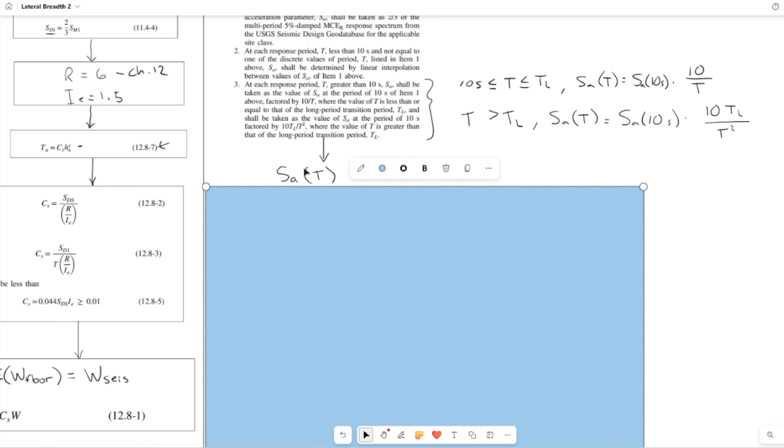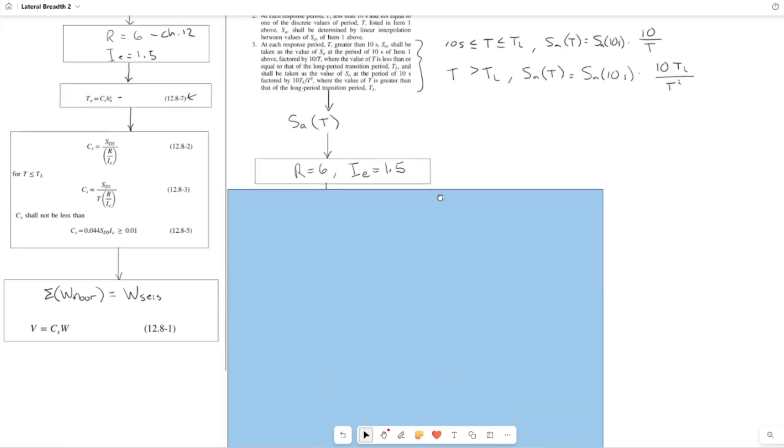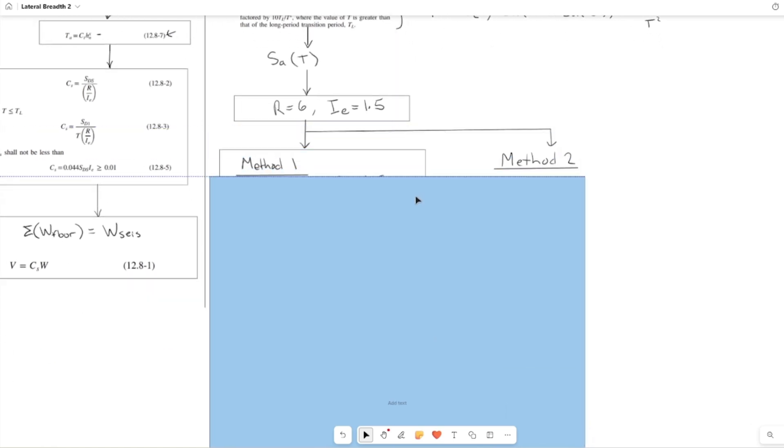The next step from this, you get s sub a as a function of t. And we really don't see too much of a difference here. You use the similar R value, same I sub E value, importance factor. So the next step, again, it gets broken out into two methods.